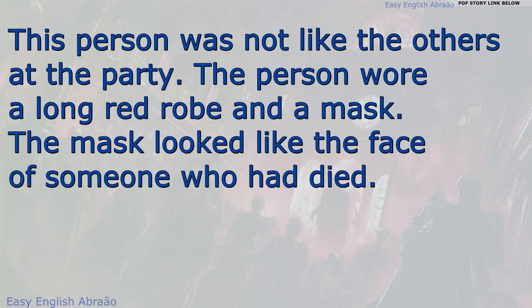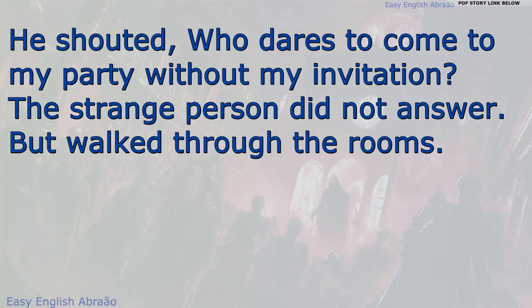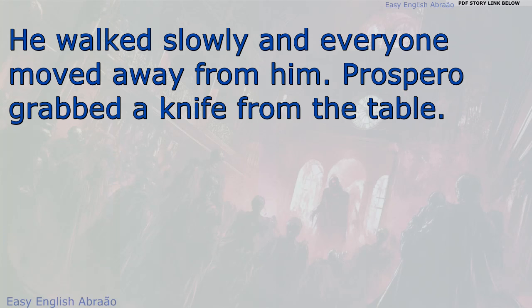This person was not like the others at the party. The person wore a long, red robe and a mask. The mask looked like the face of someone who had died. Everyone was afraid of this strange person. They whispered, "Who is this and why is he here?" Prospero became very angry. He shouted, "Who dares to come to my party without my invitation?" The strange person did not answer, but walked through the rooms. He walked slowly, and everyone moved away from him.